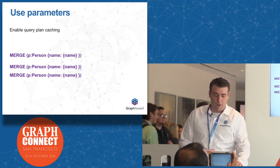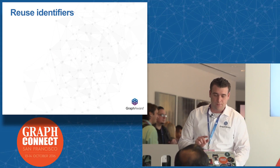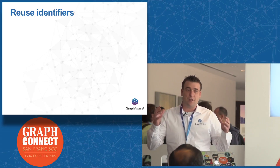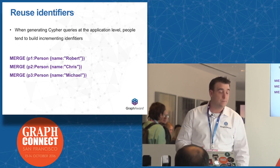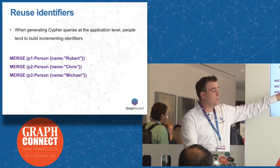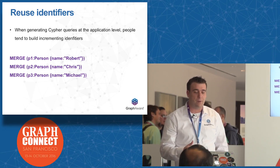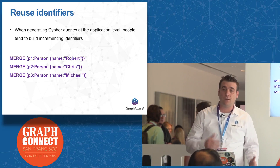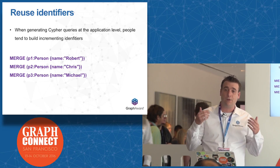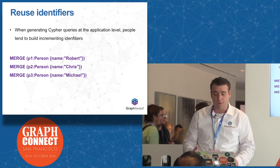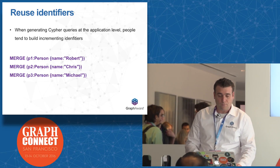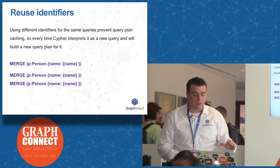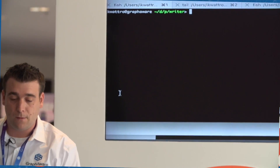I see a lot of people when generating queries at the application level creating unique identifiers like P2, P3. This is really bad because it prevents the query plan from being cached. Cypher will think every time it is a new query, so it has to recompute statistics each time. Reuse identifiers and pass parameters instead.